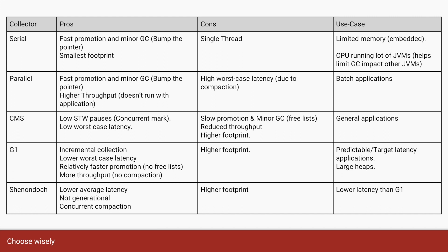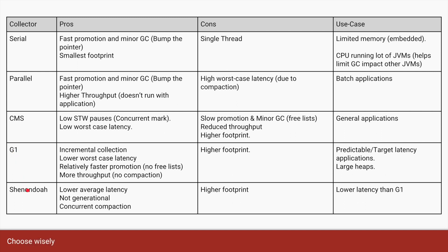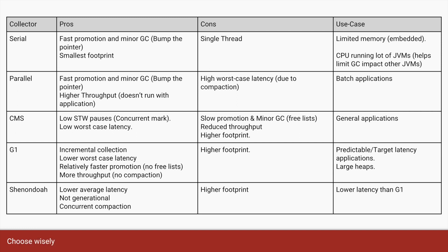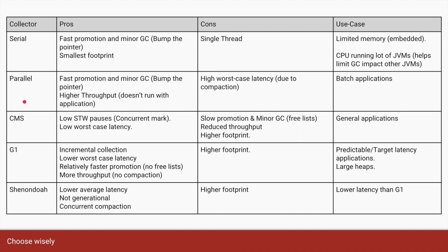There is one more collector called Shenandoah, which is an improvement upon G1. It requires a slightly higher footprint but has even lower latency than G1. It is coming in a few future versions of Java. To summarize: the serial collector is for small devices or shared CPUs; the parallel collector is best for batch applications; CMS is best for general applications; G1 is best for predictable latency; and Shenandoah is an improvement upon G1 available in upcoming Java versions.